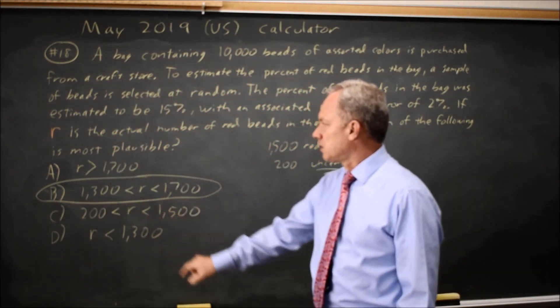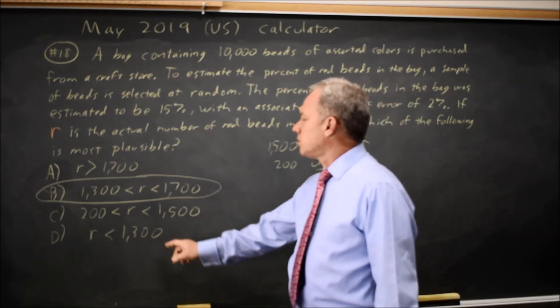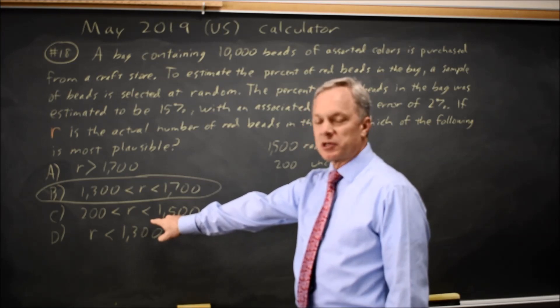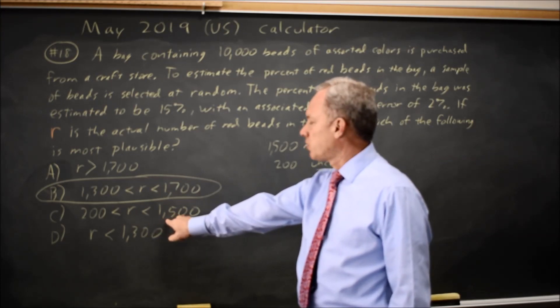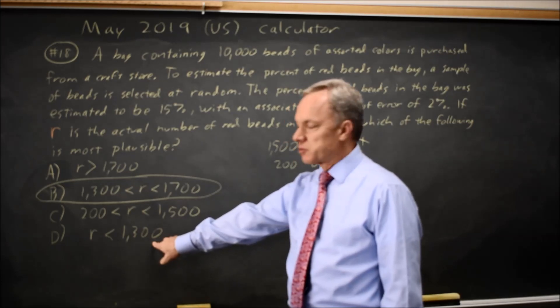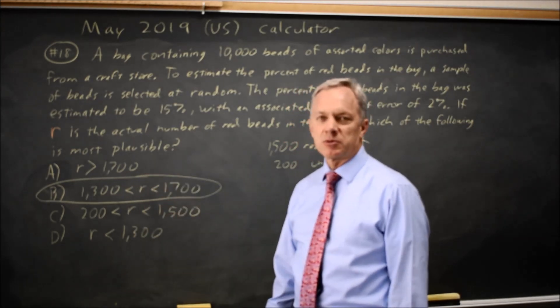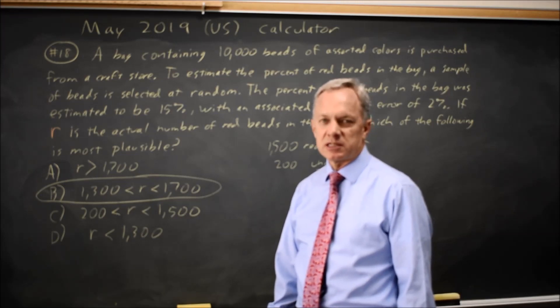Choice C, we're saying that the plausible numbers are only less than the best estimate. Choice D, we're saying the plausible numbers are way less than the best estimate. In choice E, we're saying the plausible numbers are larger than the best estimate.